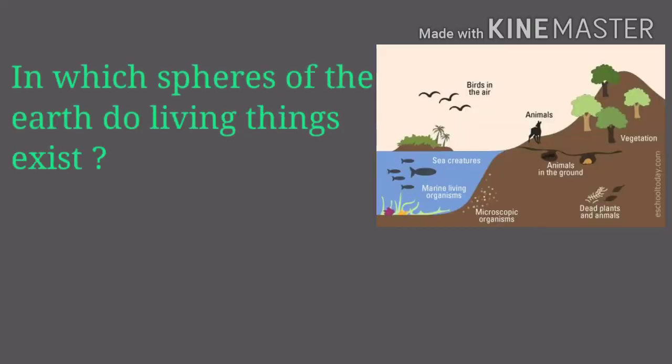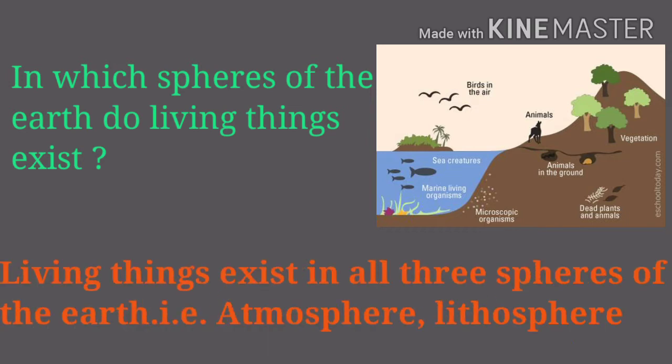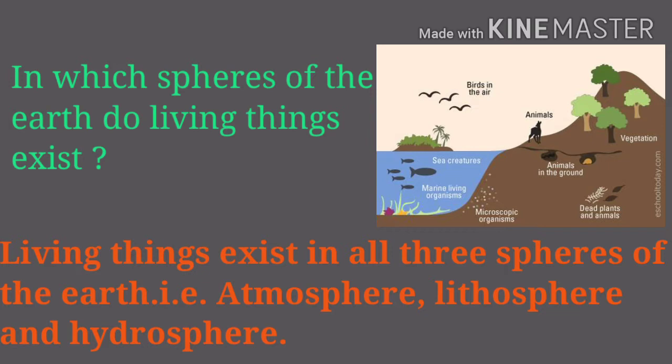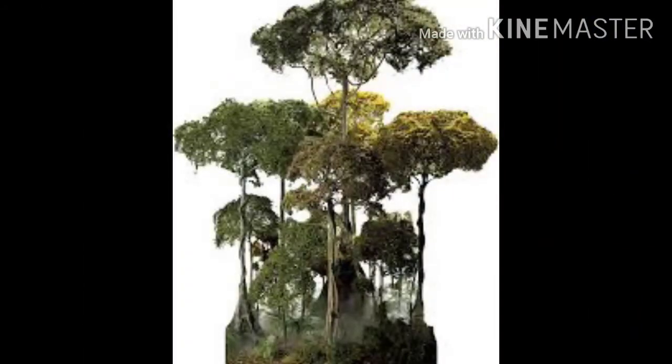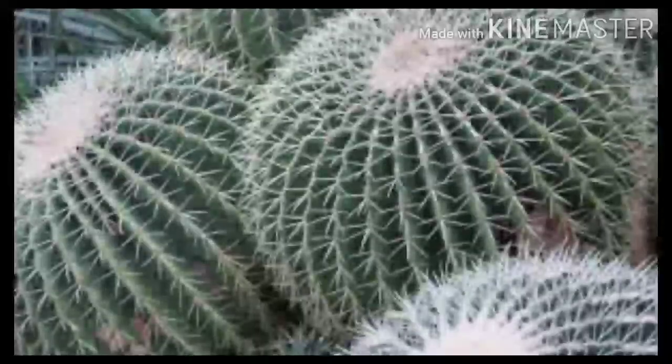Can you recall in which spheres of the earth do living things exist? Living things exist in all three spheres of the earth — the atmosphere, lithosphere, and the hydrosphere. The geographical conditions at different places on the earth are very different, yet living things exist in all these diverse conditions. Various types of living things have survived because of their ability to adjust themselves to the conditions in their surroundings.